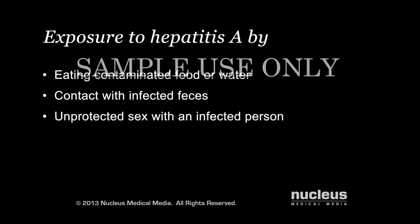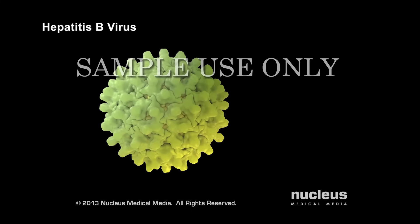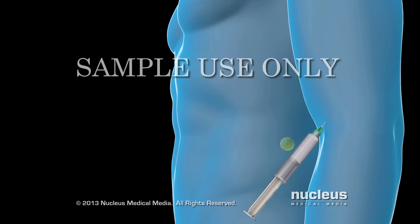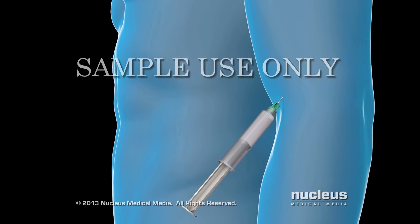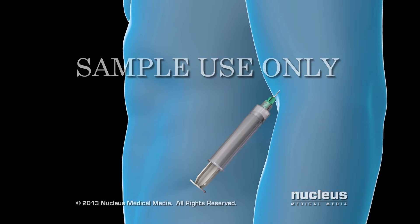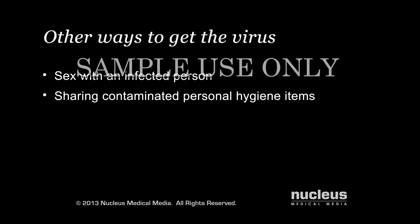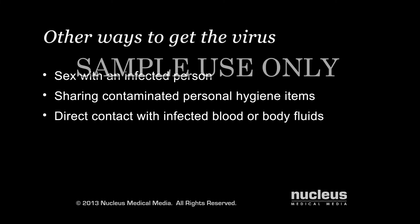Or by having unprotected sex with a person infected with the virus. If you have hepatitis B, the virus entered your body when you were exposed to the blood or other body fluids from an infected person. This could have happened from sharing a drug syringe, having sex with an infected person, sharing personal hygiene items such as razors or toothbrushes, direct contact with the blood or body fluids of an infected person, or when a mother passes it to her baby during birth.